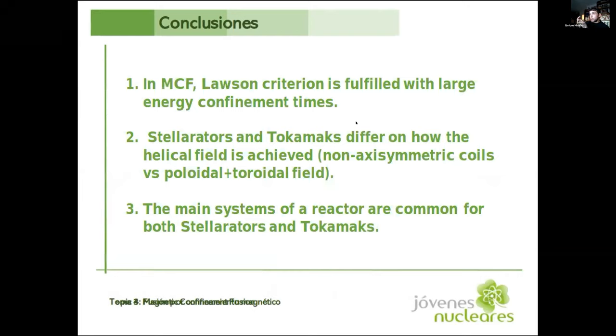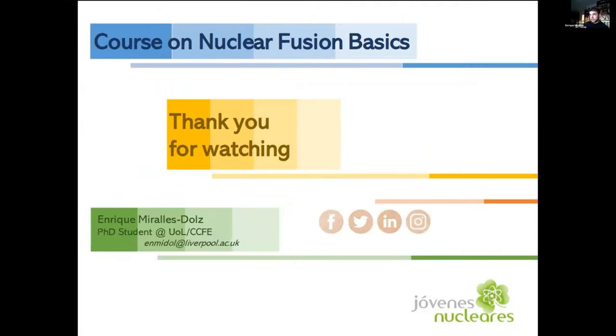And that's about it. So we need to recall that in magnetic confinement fusion the Lawson criterion is fulfilled with large energy confinement times, and in the next presentation you will see that in ICF it's the density that matters. Stellarators and tokamaks differ on how the helical field is achieved. In stellarators we build these magnets with a very weird shape to make this helical field, and in the case of tokamaks we have this combination of poloidal and toroidal magnetic field. The main systems of a reactor are common for both stellarators and tokamaks. So that's most of the things that I wanted to say. Thank you for watching, and if you have any questions...